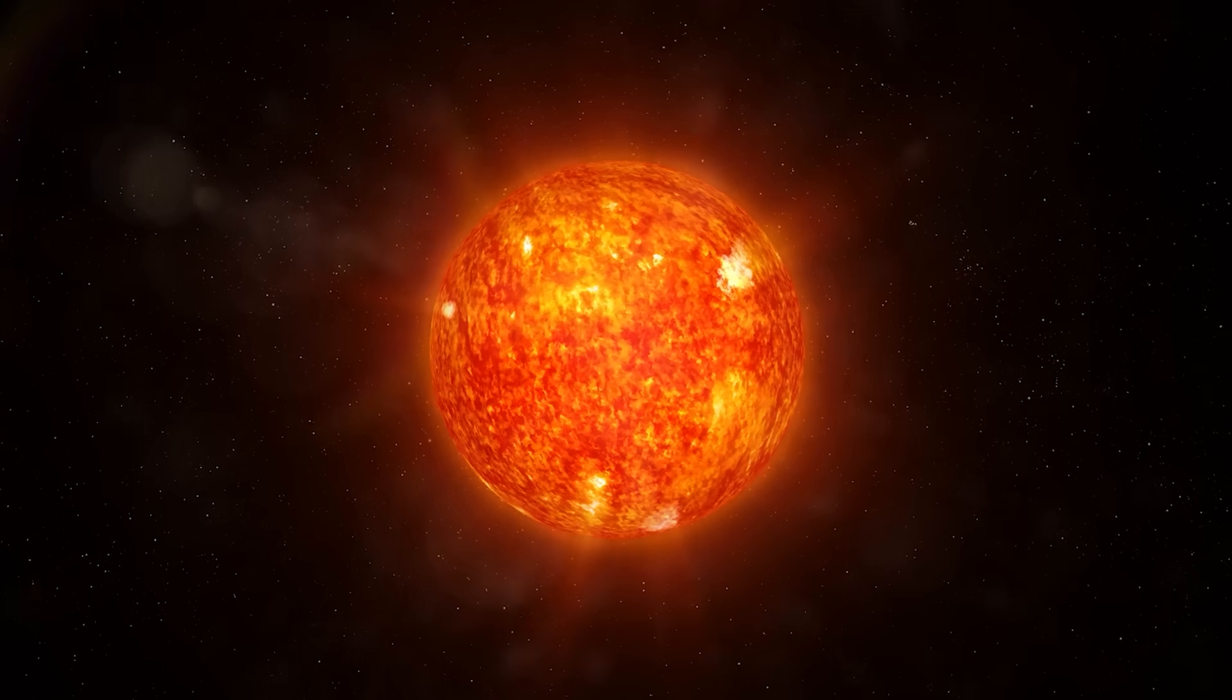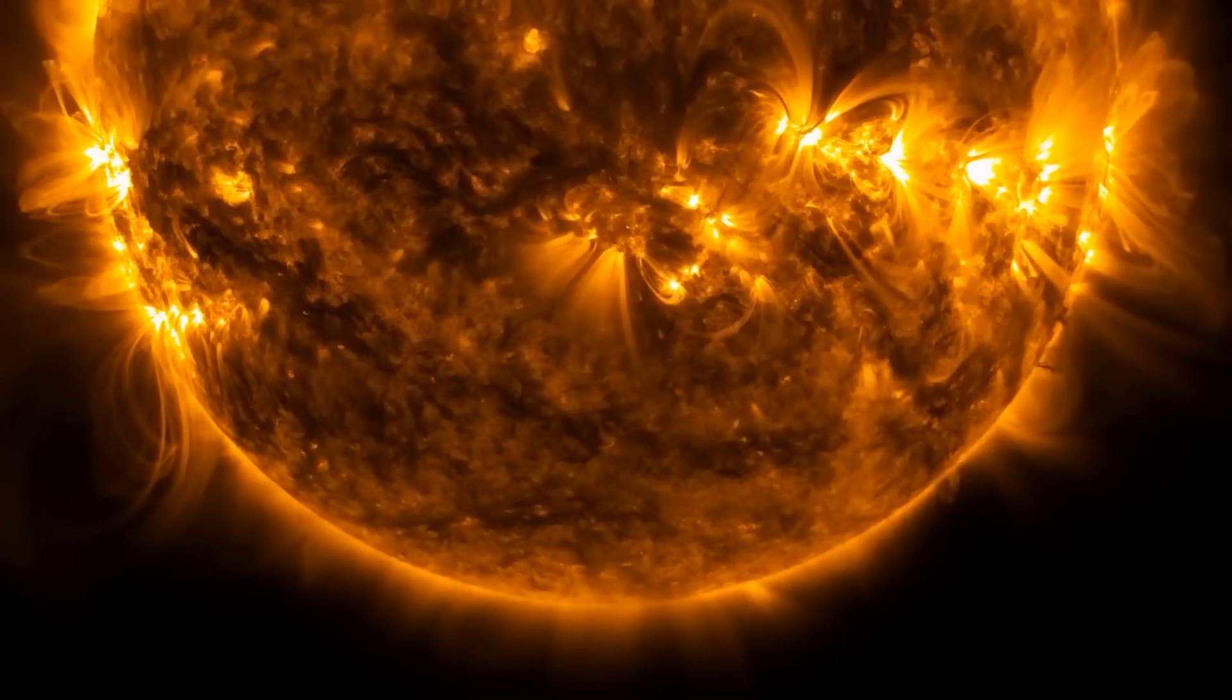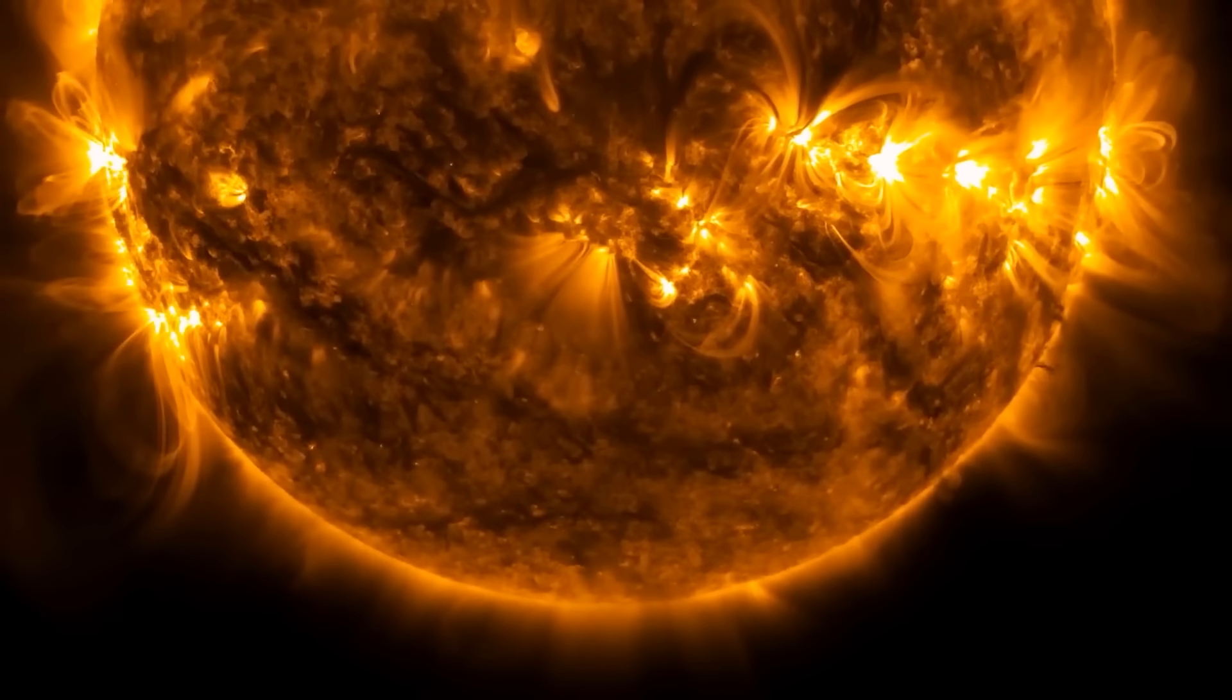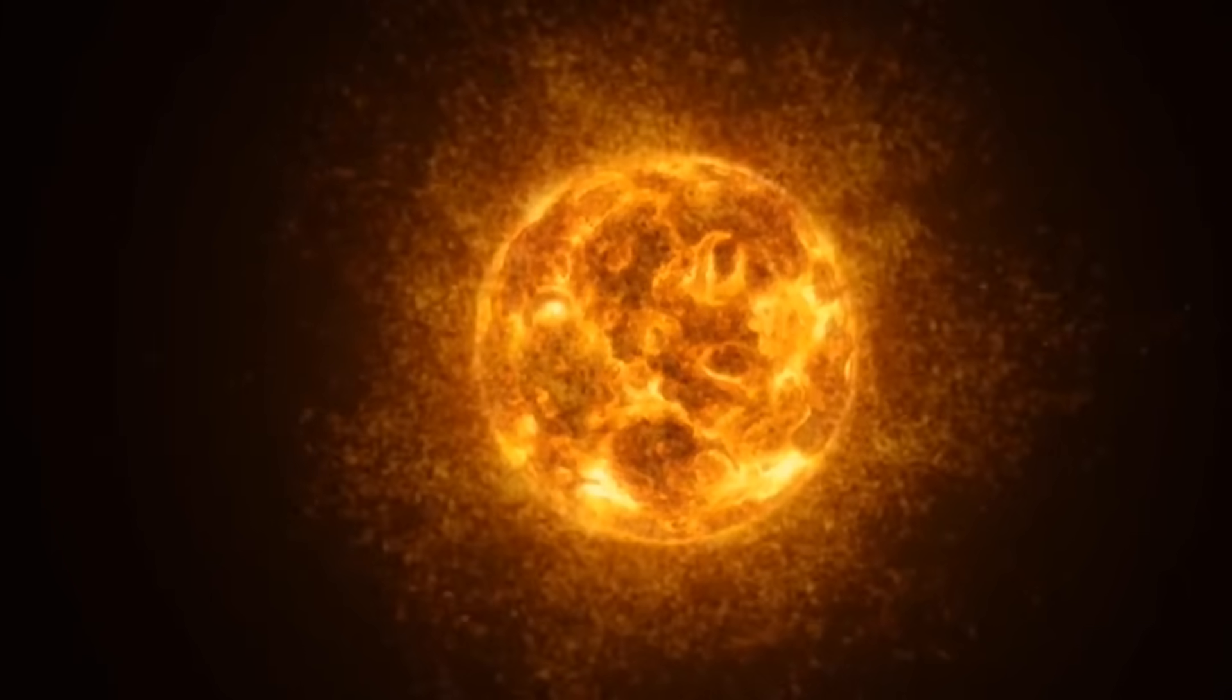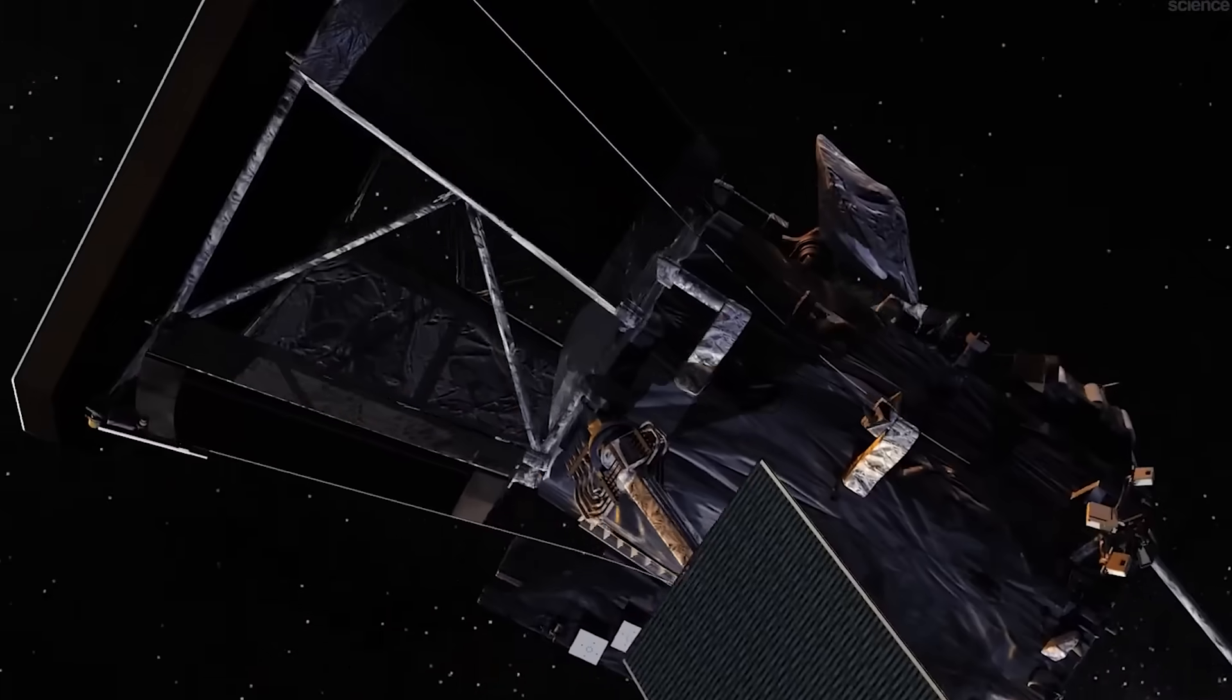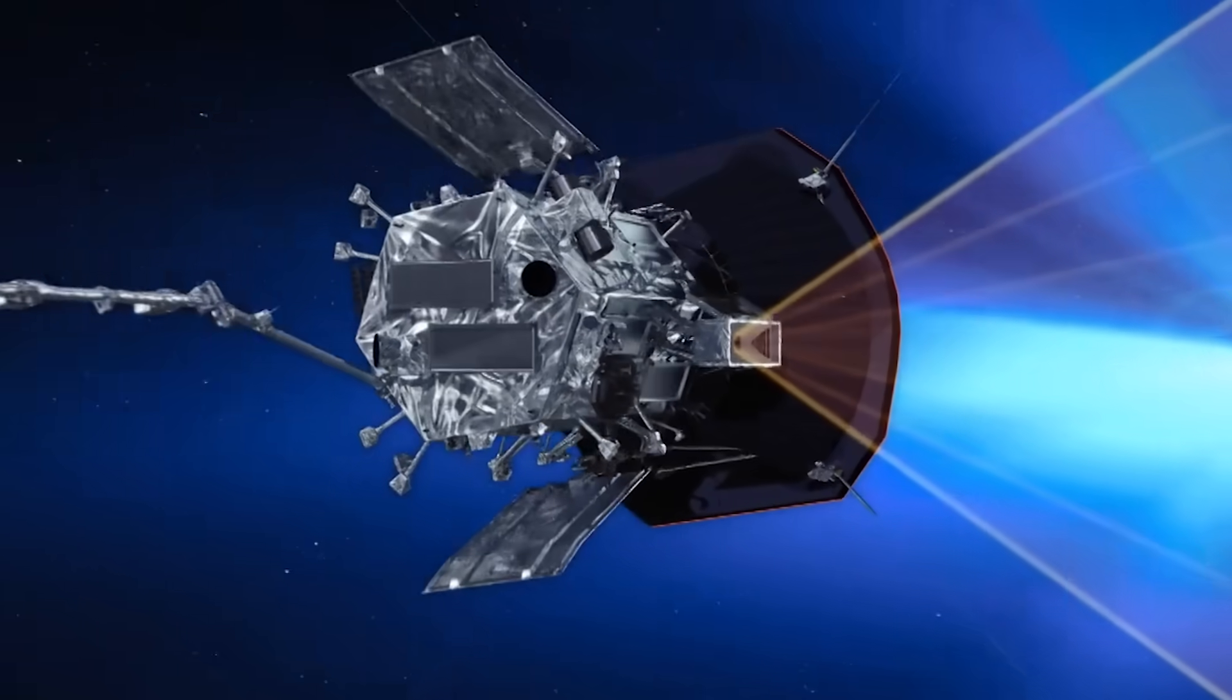Another key question was the origin of solar winds, the continuous stream of charged particles flowing from the sun at extreme speeds. How do they accelerate so rapidly? And why do they sometimes surge unpredictably? The probe was also tasked with mapping the sun's magnetic field structure, a force that governs everything from solar storms to space weather.